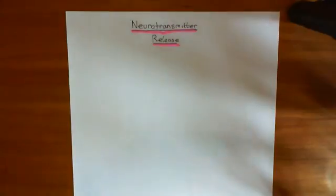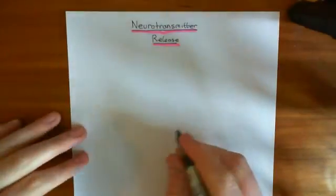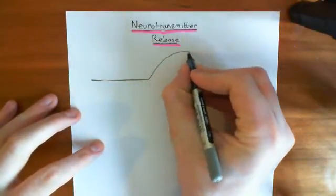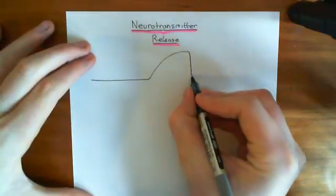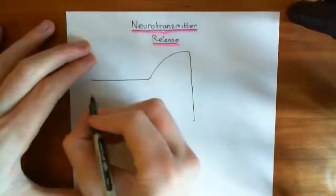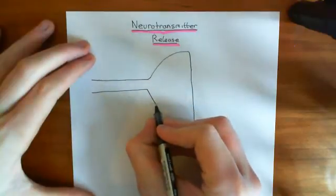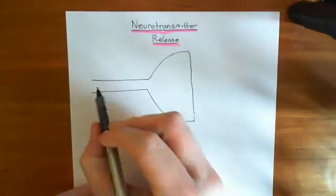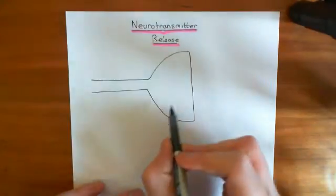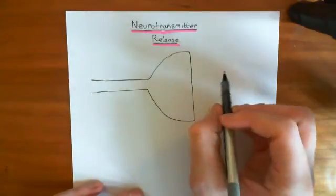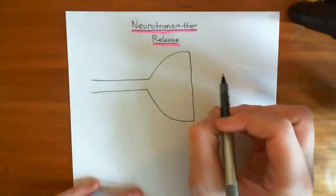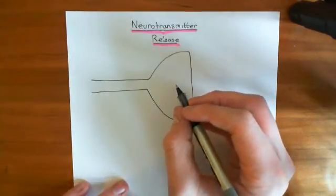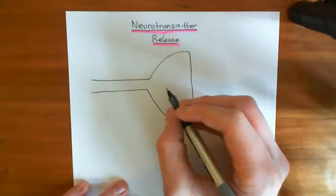We're going to begin with the filling of vesicles. Let's have our axon terminal here — this is our axon coming along, and the axon ends with what we know as an axon terminal, which will synapse onto the next cell. When an action potential arrives along the axon and stimulates the axon terminal, the axon terminal is going to start releasing neurotransmitter. And that's what this entire video is about — how does that occur? We'll start with how we get neurotransmitter into vesicles.